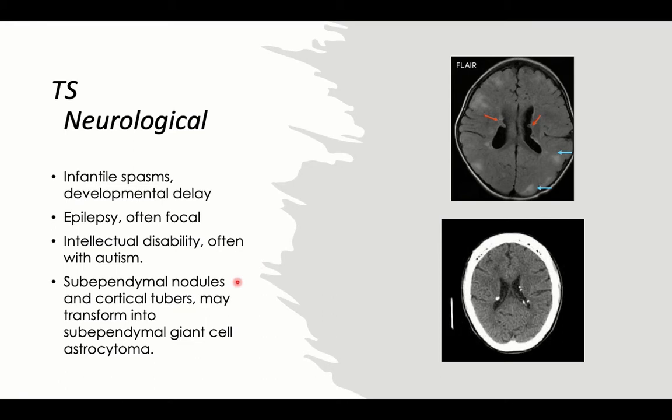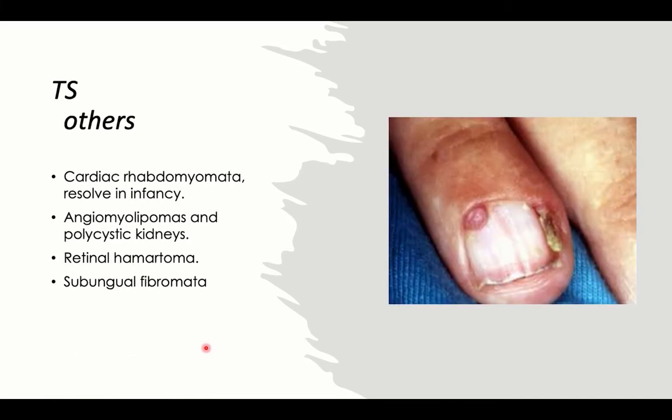Unfortunately, these nodules can be transformed into malignant tumors, such as astrocytoma and sub-ependymal giant cell astrocytoma. So the neurological features can include epilepsy, intellectual disability, pressure symptoms, and malignant conditions.